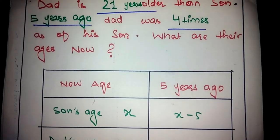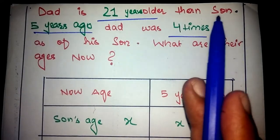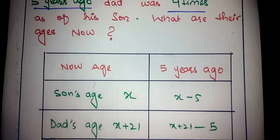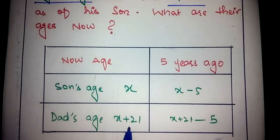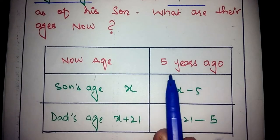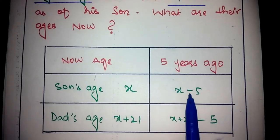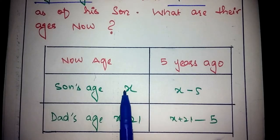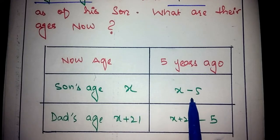Dad is 21 years older than his son, so if the son's age is X then the dad's age is X plus 21. Five years ago means we go back 5 years: the son's age 5 years ago was X minus 5.